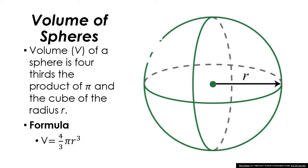Trying to find the volume — what does volume mean? Volume is the amount inside of an object. So, volume of a sphere is four-thirds the product of pi and the cube of the radius r. In other words, if you look at the formula: volume equals four-thirds pi r cubed. This is something you are definitely going to need to know and remember.